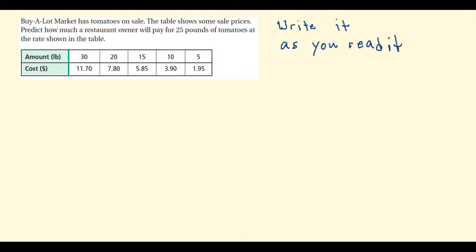Now we can read through this problem, and I'm only going to read through the first two sentences. Buy A Lot Market has tomatoes on sale. The table shows some sale prices. I'm going to pause and move down to the table real quick.